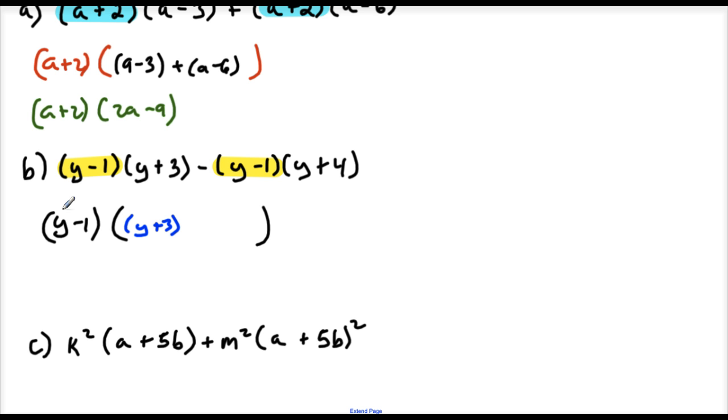If I distribute this, I'm going to get back this guy. And then Y minus 1 times what gives me back all this? Well, I have to have a minus sign right here. I've already pulled that out, so all I have left is Y plus 4.